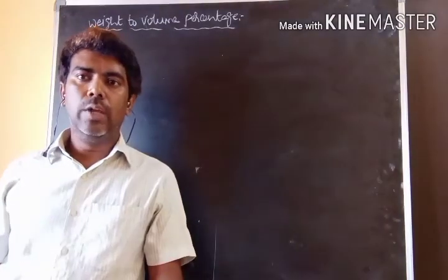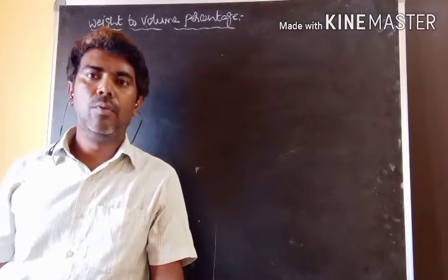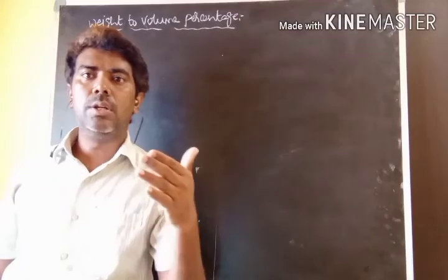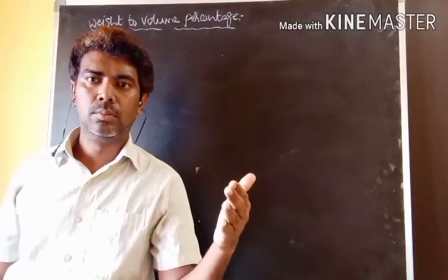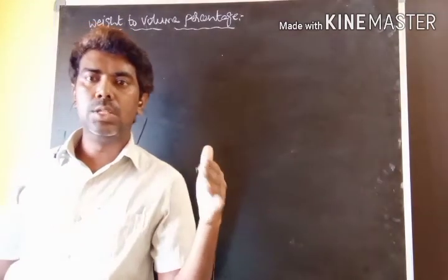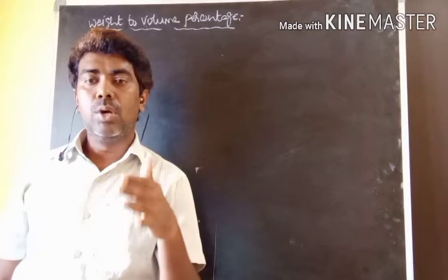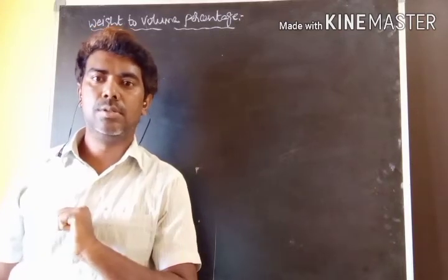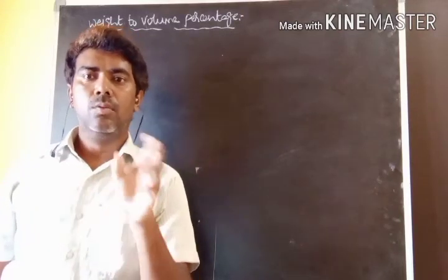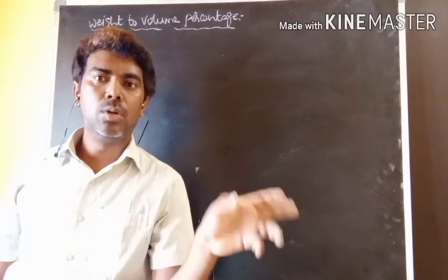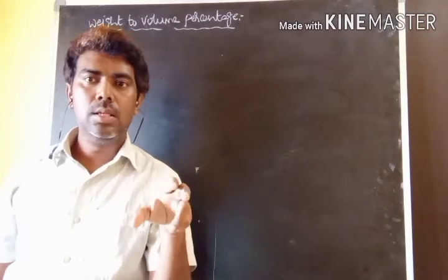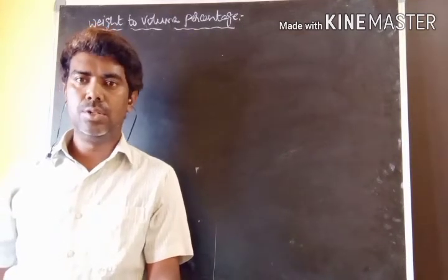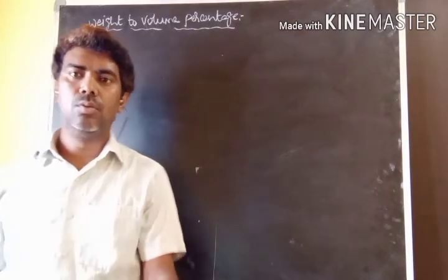We have discussed volume-volume and weight-to-weight percentage. Now we will discuss weight-to-volume percentage. In this method, the quantity of solute is given in grams, while the quantity of solution is given in milliliters. When solute is in grams and solution is in milliliters, we use the weight-to-volume percentage.